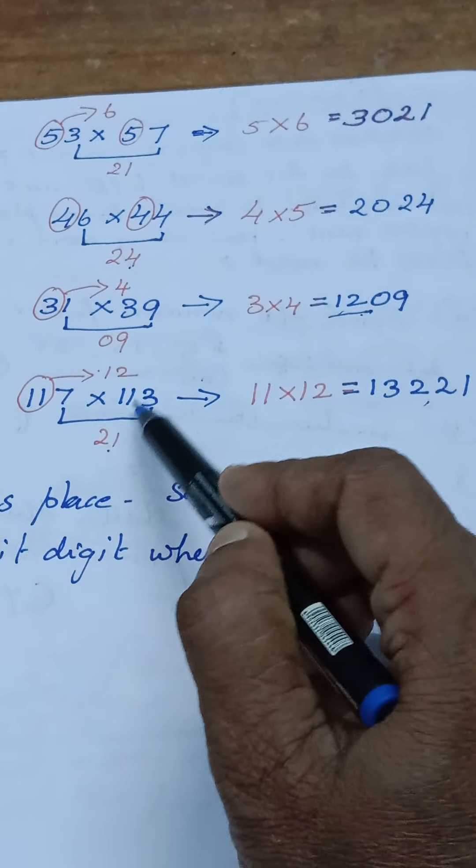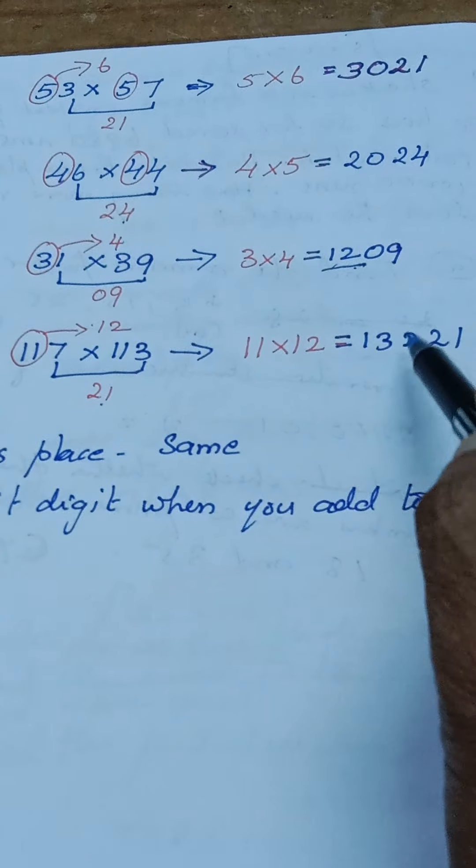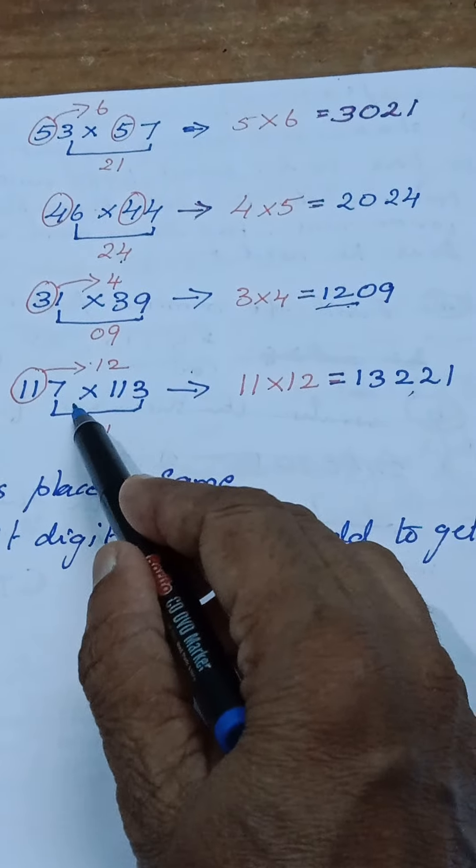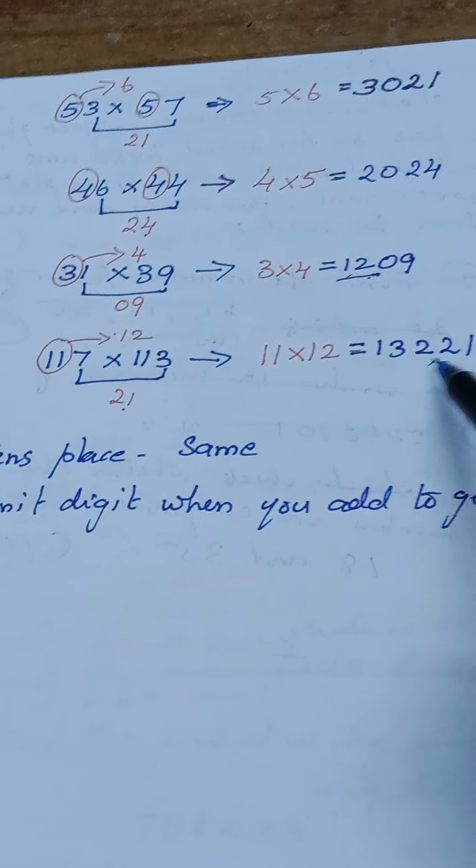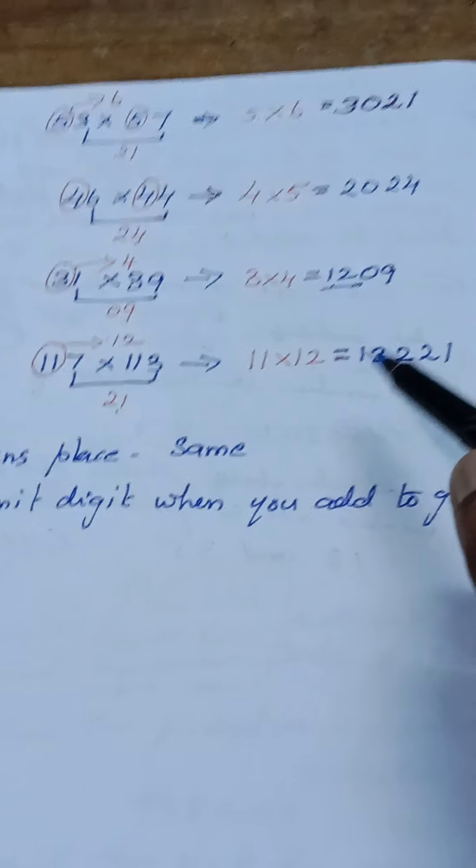117 into 113. So 11 into 12 - when I'm multiplying I'll be getting 132. And 7 into 3 is 21, so my answer is 13221. So let us make this multiplication of two-digit numbers very simple.